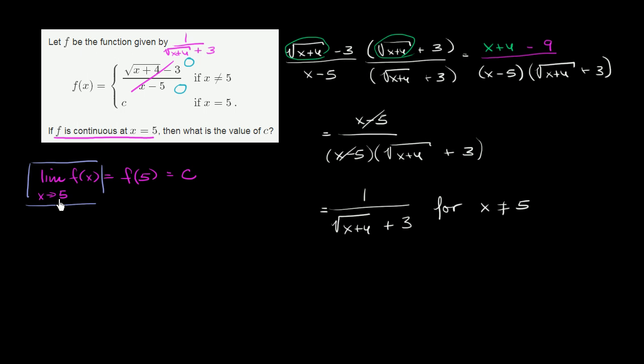And so now when we take the limit as x approaches 5, we're going to get closer and closer to 5. We're going to get x values closer and closer to 5, but not quite at 5. We can use this expression right over here. So the limit of f(x) as x approaches 5 is going to be the same thing as the limit of 1 over the square root of x plus 4 plus 3 as x approaches 5. And now we can substitute a 5 in here.